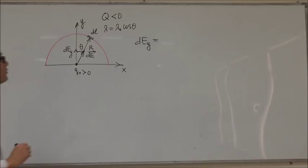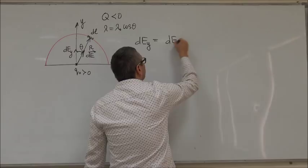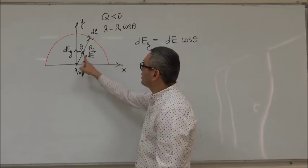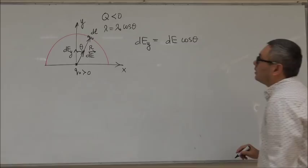is equal to DE times cos theta. If you just look at this directions, then you can see that DEY is equal to DE times cos theta.